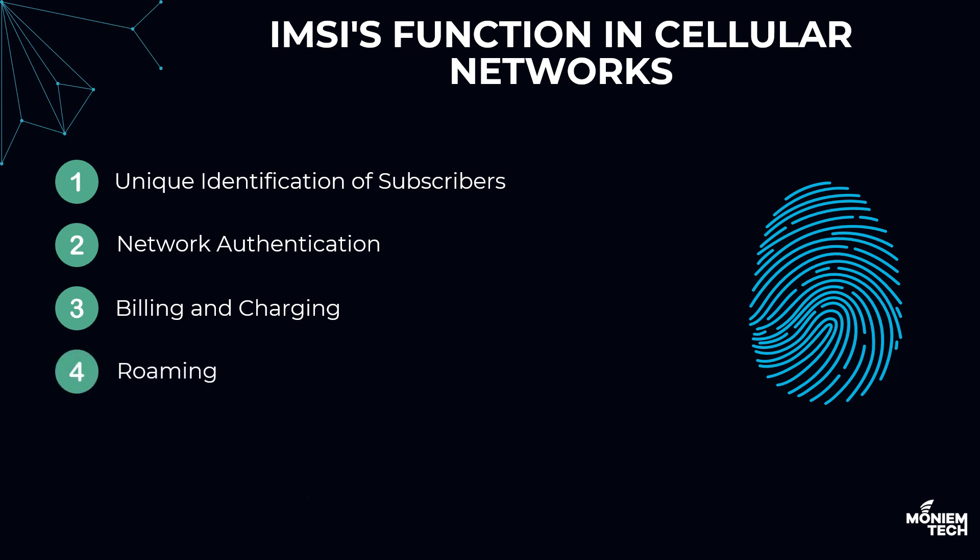Third is roaming. IMSI is used in the global roaming architecture to identify the subscriber's home network and help the foreign, or visited, network route the traffic and billing back to the home network.